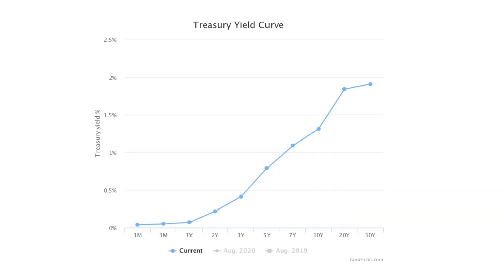This is the Treasury yield curve as of August 2020. This is just a snapshot of the yield curve at a specific point in time — this curve could look different if you examine it at another time, such as next month, next year, or five years from now. On the far left we have one month, then three months, one year, two years, three years, and all the way to the right, 30 years. The x-axis shows time to maturity and the y-axis shows the interest rate for each time horizon. Here, short-term interest rates are much lower than long-term interest rates, and the yield curve is upward sloping.